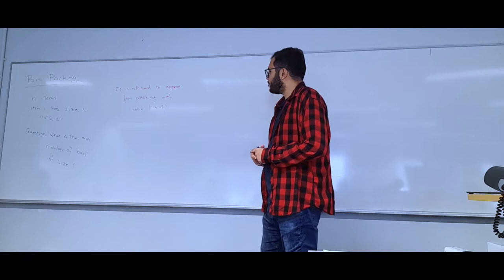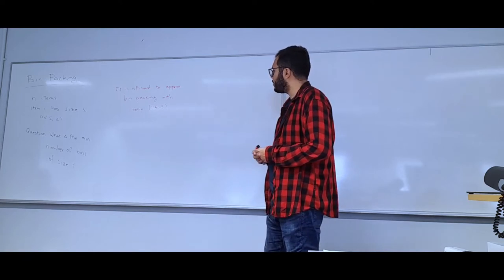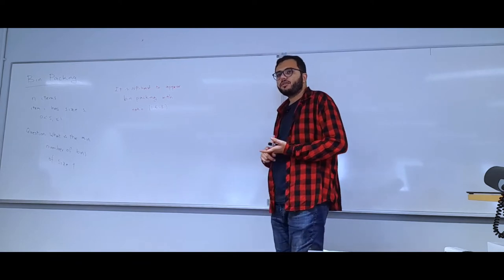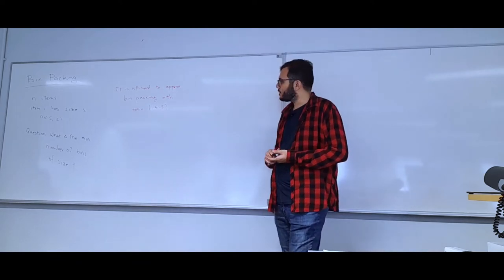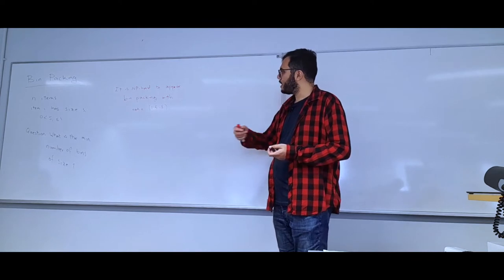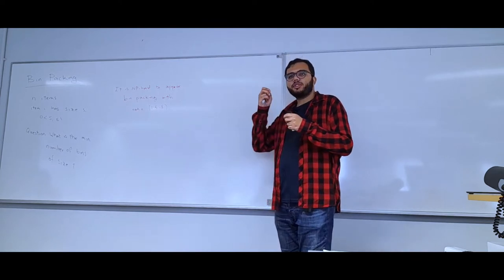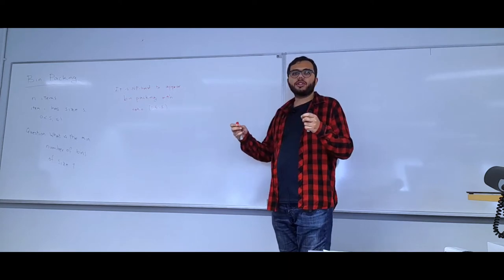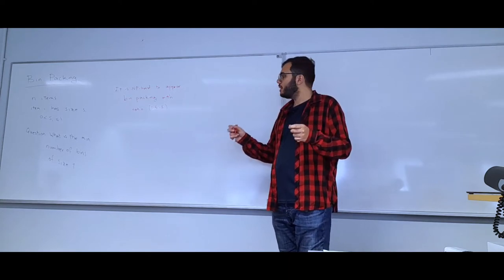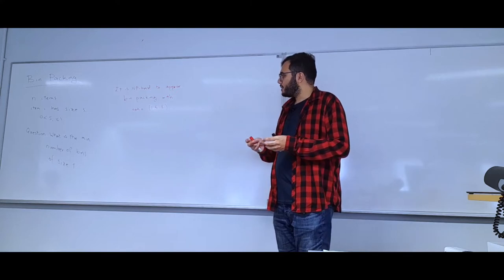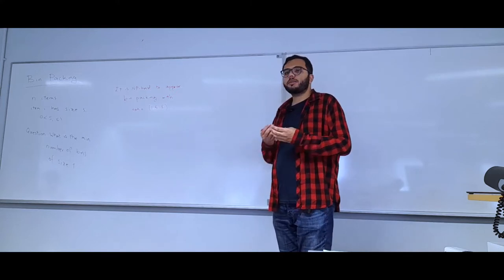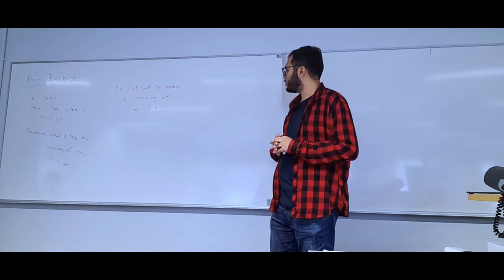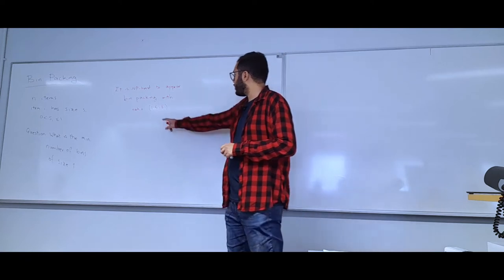We saw two simple algorithms. The first gave an approximation ratio of 2 using first-fit: take each item and put it into the first bin it fits; if it doesn't fit in any current bin, create a new one. The second algorithm was the same idea but we sorted all items by size and placed the largest first, giving us a ratio of 1.5.